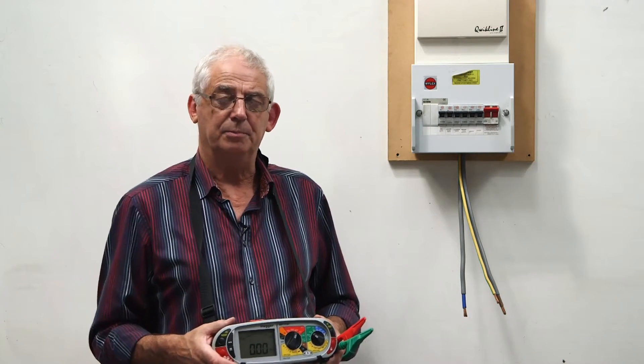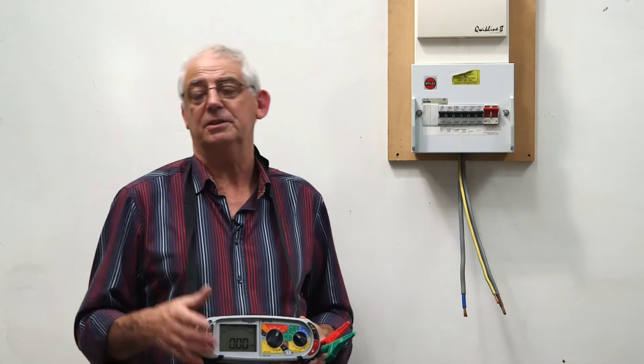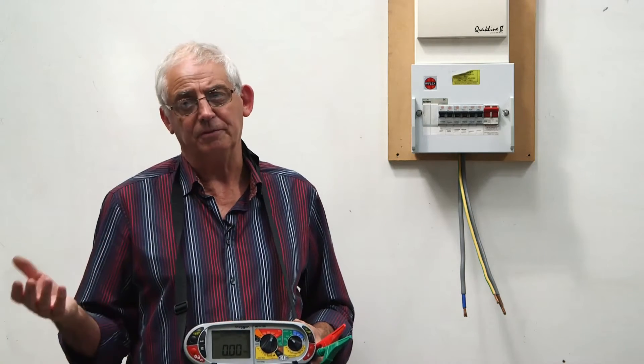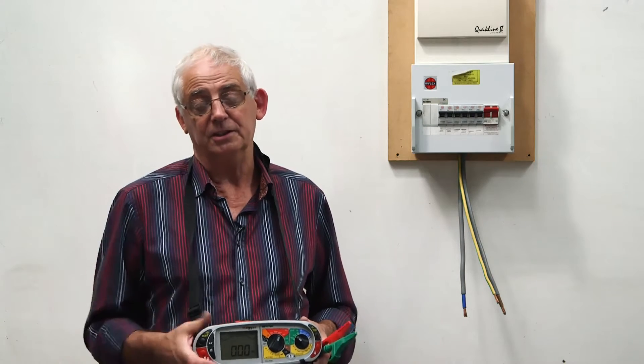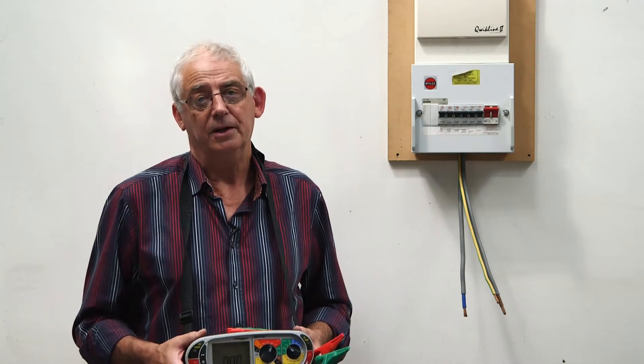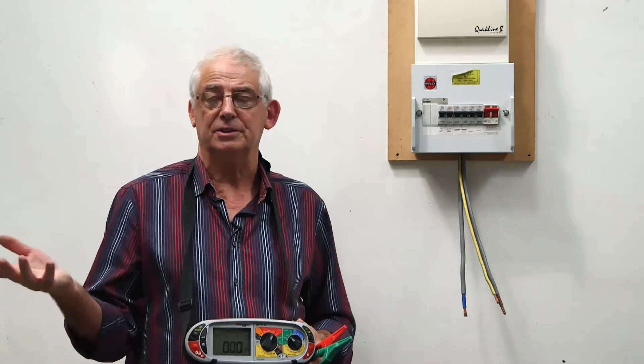I also need to bypass any dimmer switches, motion sensors, stuff like that, which obviously is an electronic switch. I need to disconnect any fluorescents. I need to make sure that all the light switches are switched on.